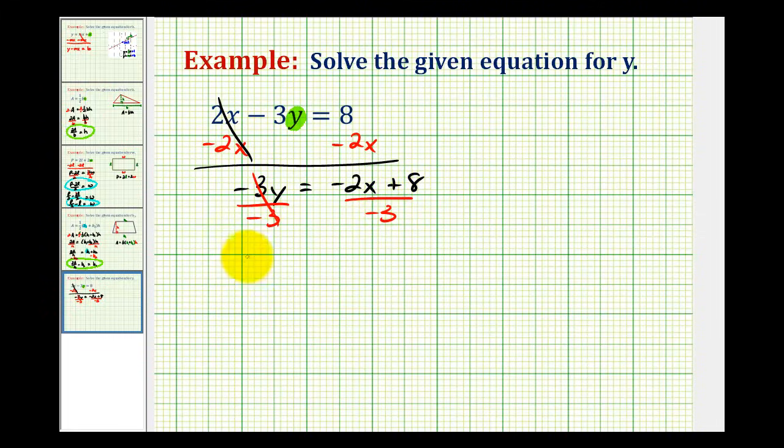So this simplifies to Y. And on the right side, we have negative two X plus eight divided by negative three. Now we have solved the equation for Y, which is what this question asks us to do.